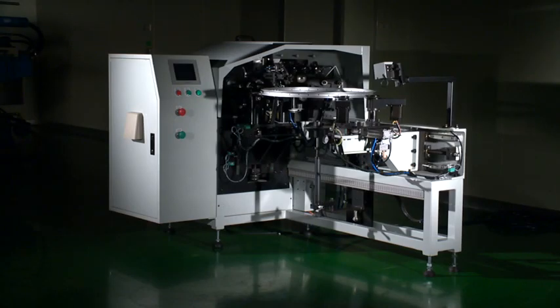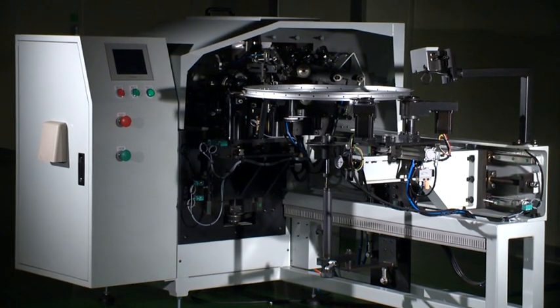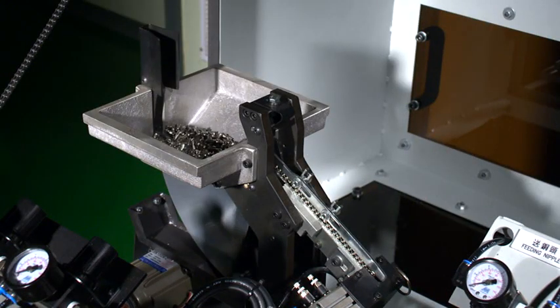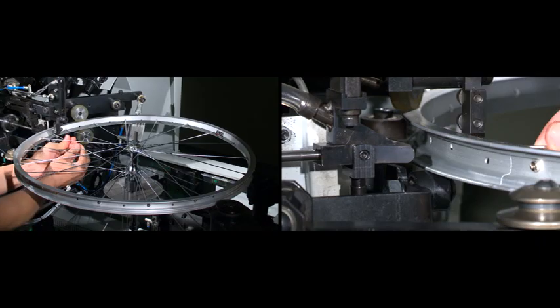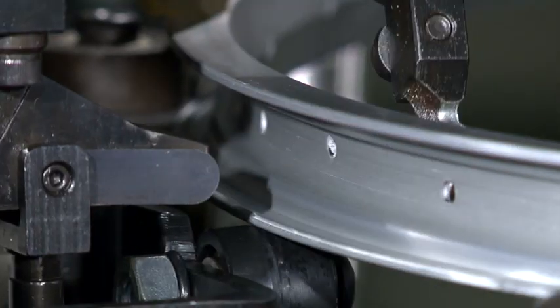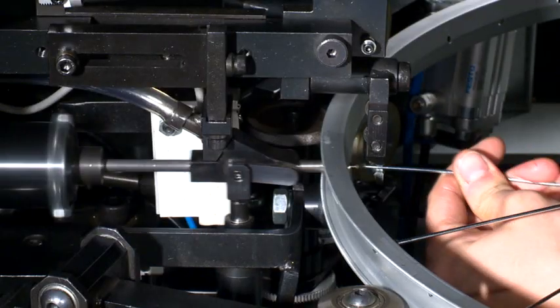Nipple feeding, spoke lacing and tightening machine with auto nipple feeding and high production capacity of more than 50 rims per hour. The nipple and spoke can be tightened to reach the tension per request.